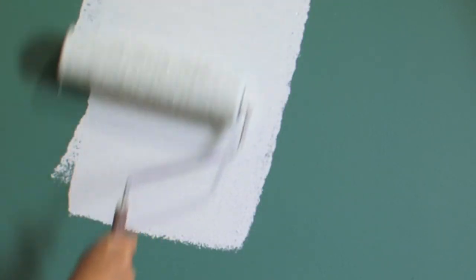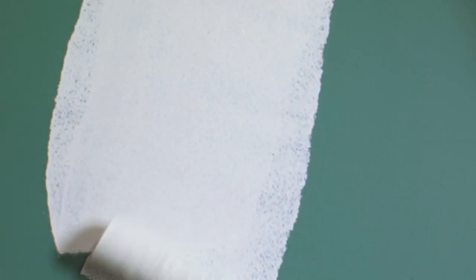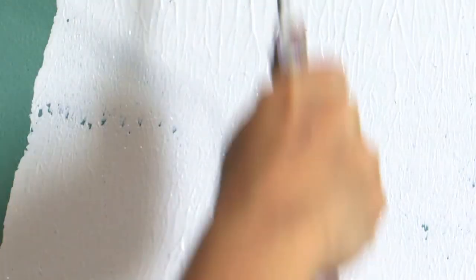Opacity is an indicator of how much paint will be needed to cover a specific area. It affects a paint's ability to conceal the previous coating. If a paint's not opaque enough, the original color or pattern will show through.